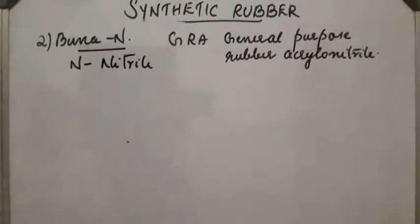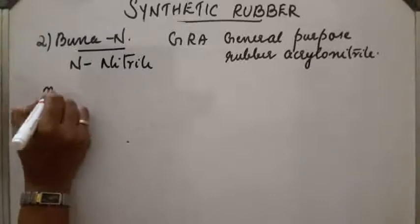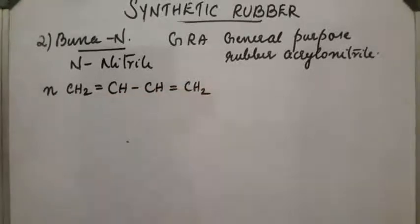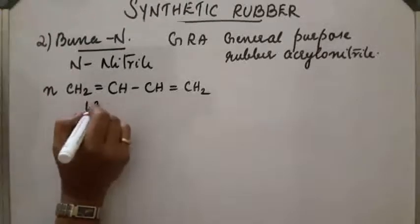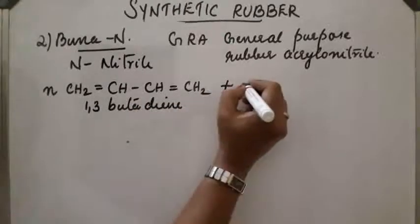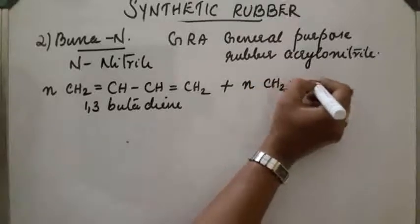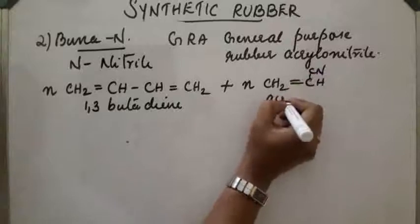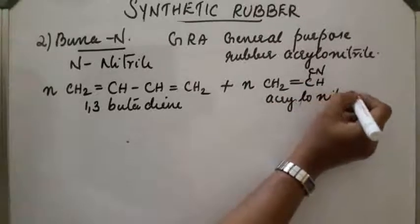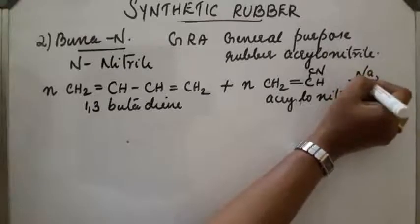Here, also copolymer is obtained from 1,3-butadiene and acrylonitrile. Second monomer is acrylonitrile. So, copolymerization in the ratio: 1,3-butadiene, CH2 double bond CH=CH-CH2, with acrylonitrile CH2=CH-CN. Polymerizes in presence of sodium.